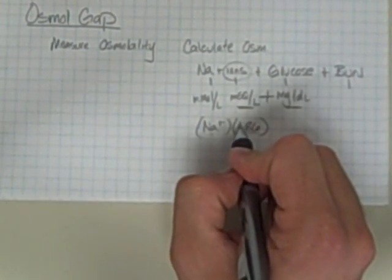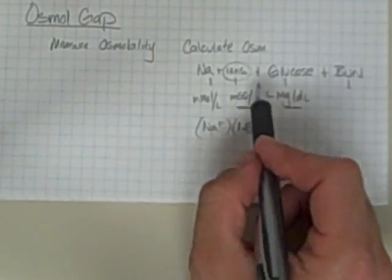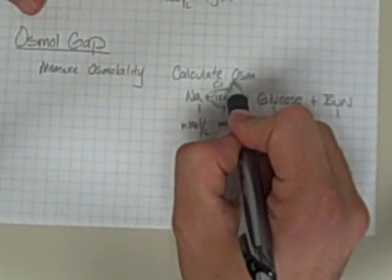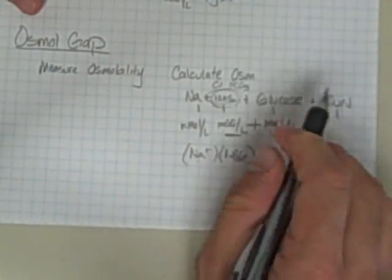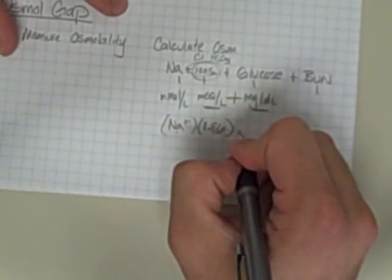So this is sodium times 1, or we're using that as a factor to calculate these other ions like the chloride and the bicarb. So sodium times 1.86 takes care of the ions that I'm worried about,